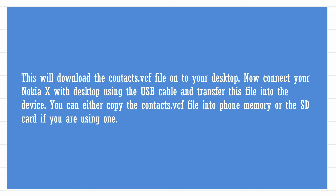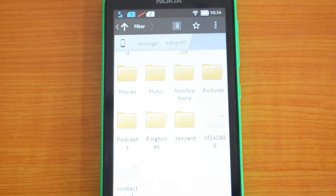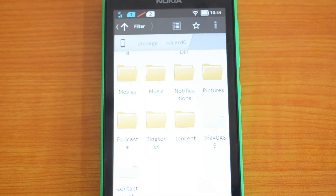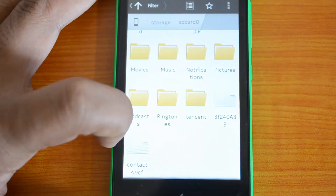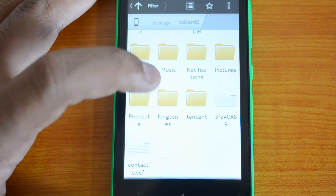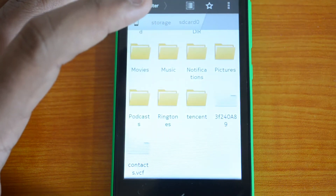Now connect your Nokia X phone using the USB cable to your PC, then transfer the downloaded contacts VCF file to the phone memory or memory card. We've now transferred it to the phone memory, and you can see the contacts VCF file is there.